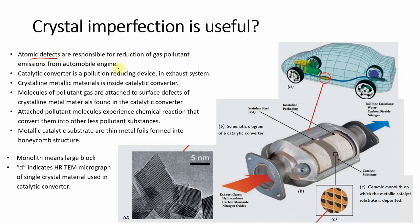Inside an automobile engine there is an exhaust system. The job of this exhaust system is to convert the hazardous gases coming out of the engine into less hazardous gases and expel them outside the engine. The role that atomic defects play in this process is what we will examine.